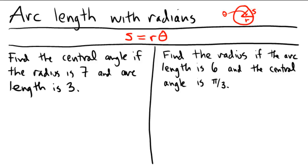So in the first problem on the left, we have find the central angle if the radius is 7 and arc length is 3. So arc length s is 3, radius r is 7, and angle is theta.